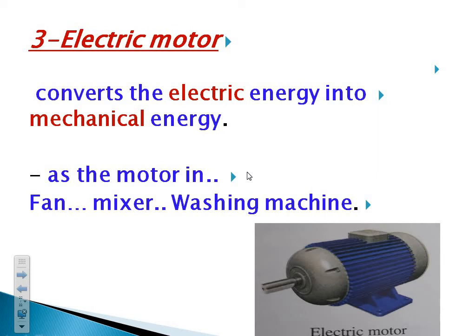The third and last device is the electric motor. This electric motor, which is found in many different machines at our homes, converts from electric energy into mechanical energy — electric into mechanical — as the motor in a fan, mixer, and washing machines. When you turn on the fan, you give it electric energy, and once you connect it to electricity, it starts to move, which is mechanical or kinetic energy. So the motor changes from electric into mechanical energy.